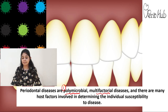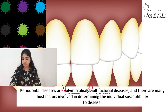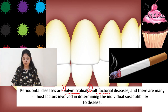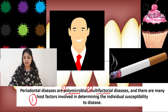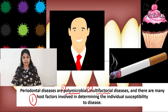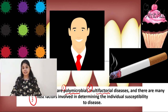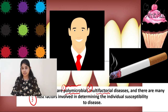The second aspect is the multifactorial nature, meaning there are certain intrinsic as well as extrinsic factors like smoking and dietary substances that influence the progression of periodontal disease. The third and most important aspect is host factors. Certain individuals are susceptible to periodontal disease whereas others are not. If a person is not susceptible, the host is able to neutralize the microorganisms and periodontal disease does not occur. Host susceptibility is very important for disease initiation and progression.